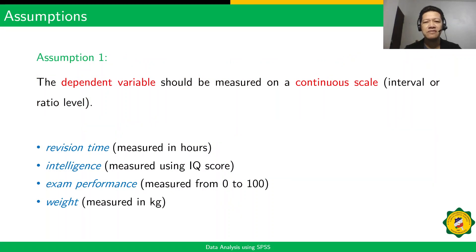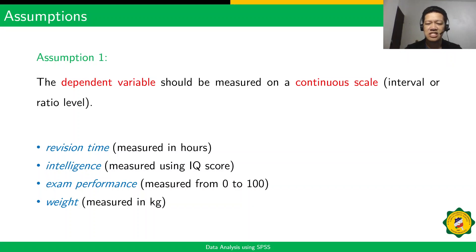Here are the assumptions for our data set before using the paired sample t-test. The dependent variable should be measured on a continuous scale, that is, in interval or ratio. Examples of data under these levels are revision time measured in hours, and intelligence measured using IQ score.